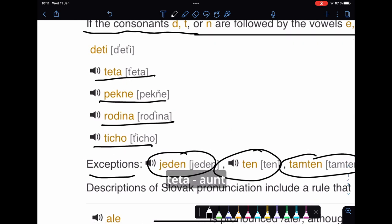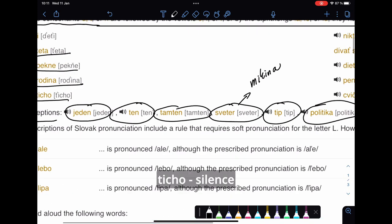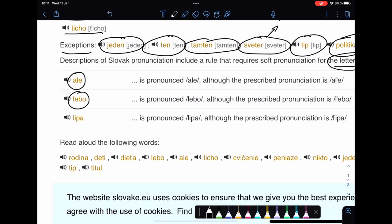Teta is aunt, pekne is nice, rodina is family, ticho is quietness. Ale is but, lebo is because, but alebo is or. This is a really tricky word.